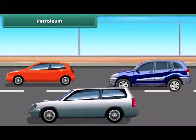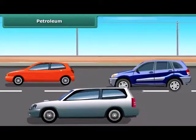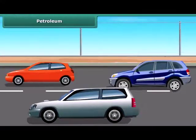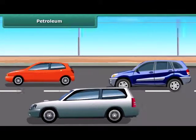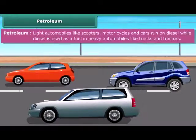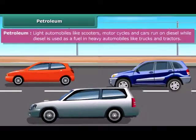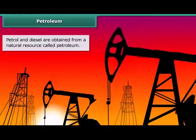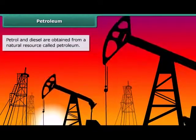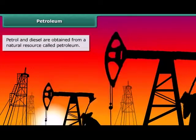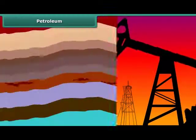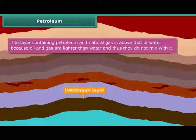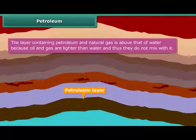Friends, most luxury cars and vehicles run on either petrol, diesel, or compressed natural gas, also known as CNG. Petrol and diesel are obtained from a natural resource called petroleum. Petroleum and natural gas deposits exist as a layer above the water layer.